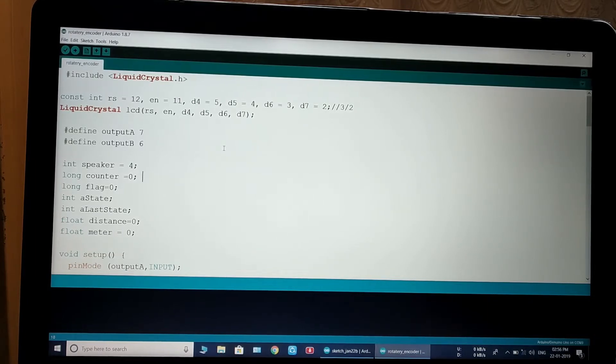Declare counter variable, declare flag, declare a state means initialize. Float distance equal to 0, initialize float meter equal to 0.